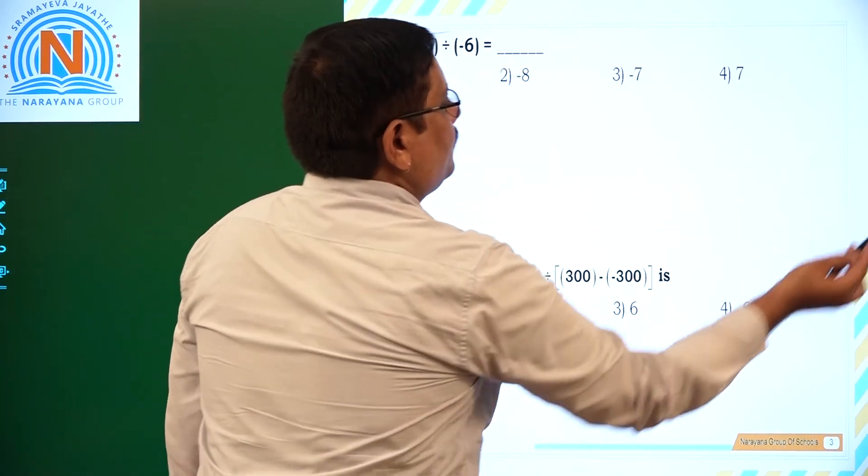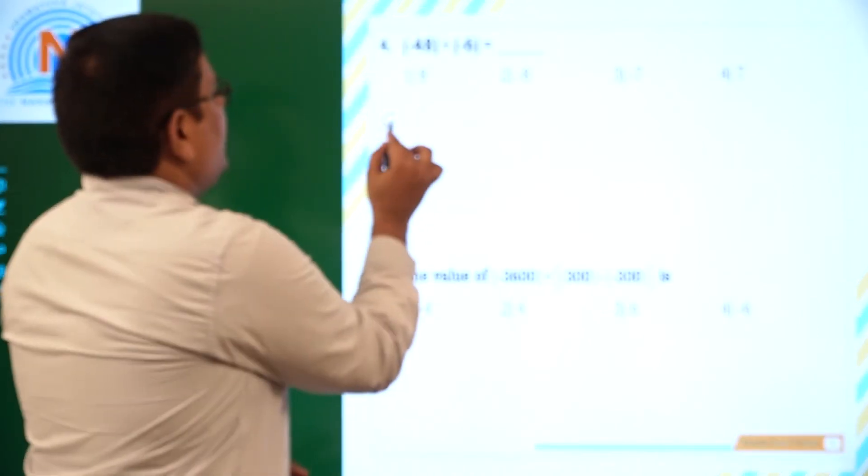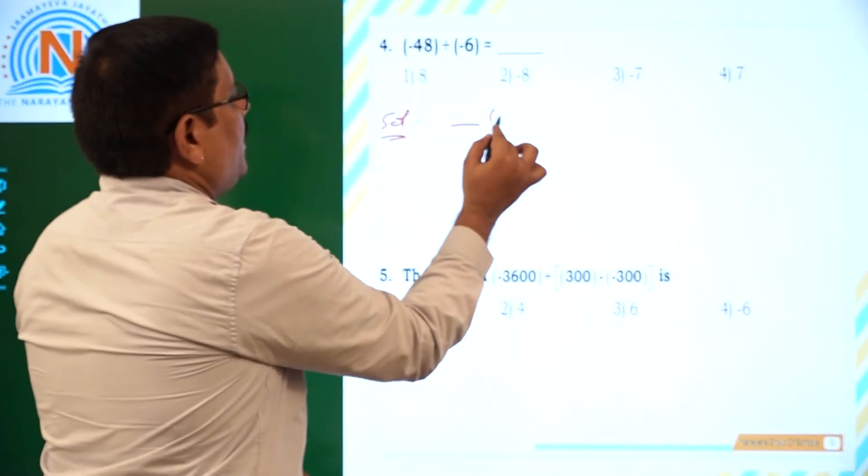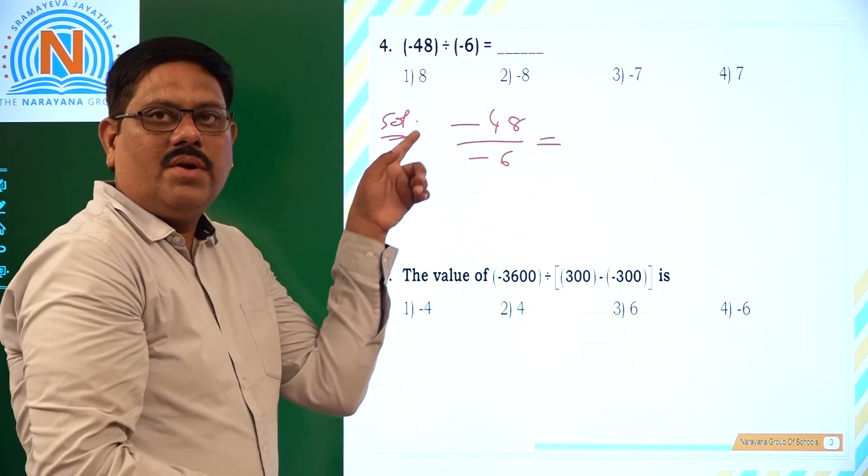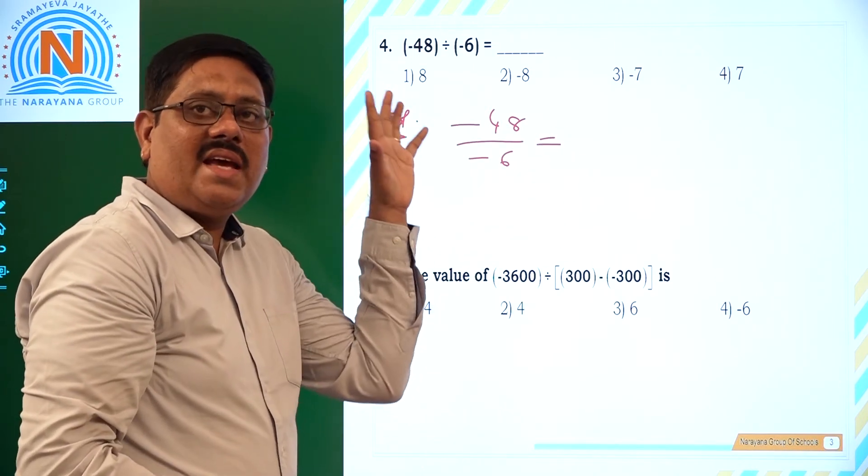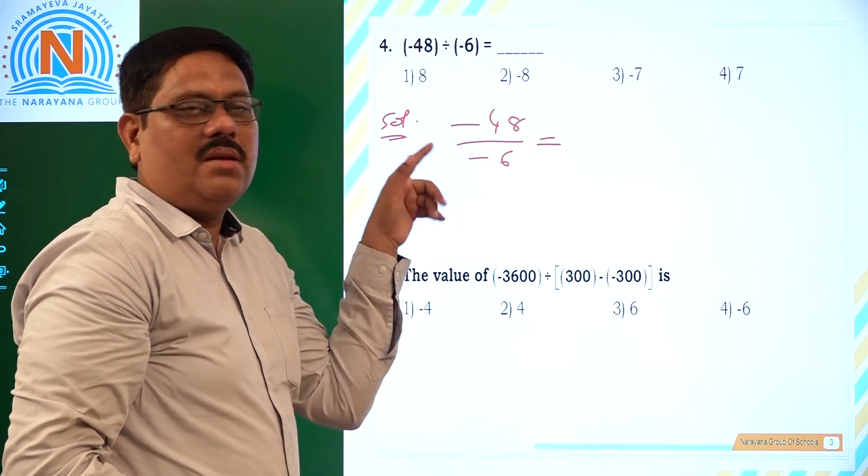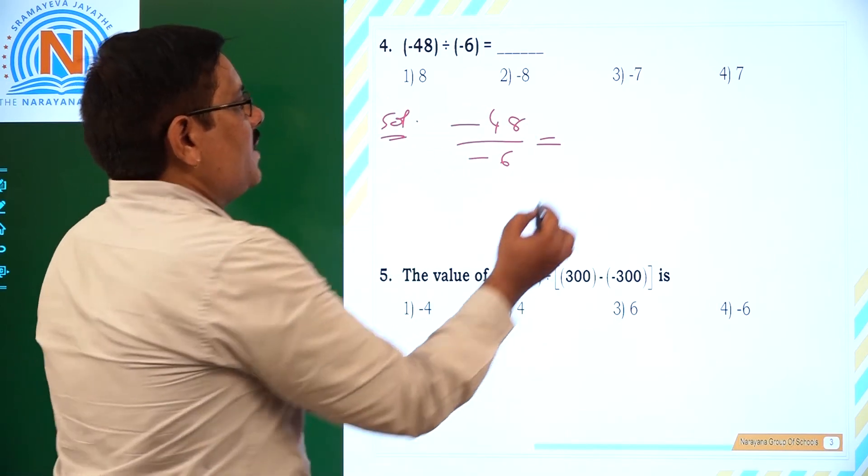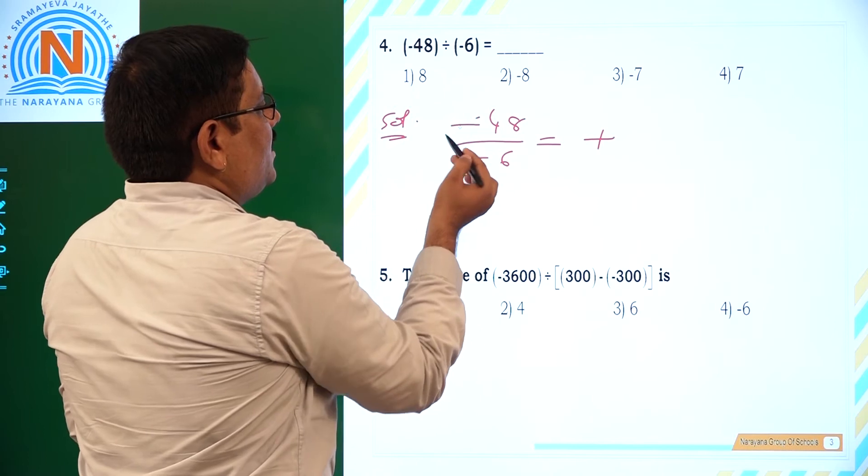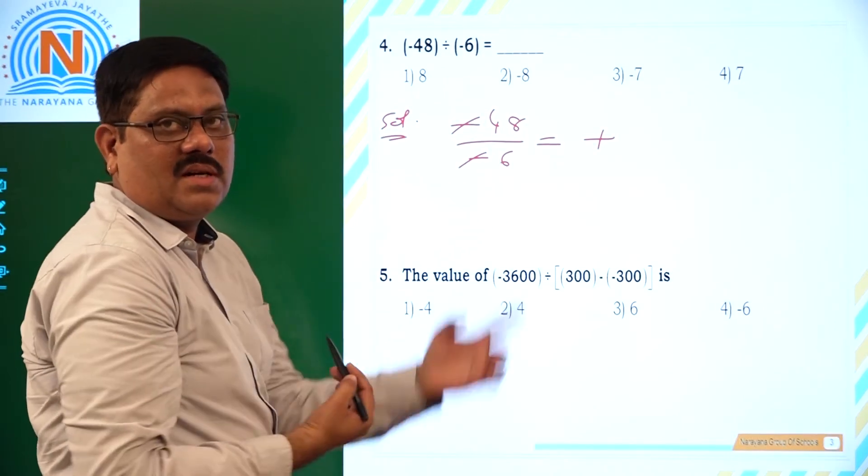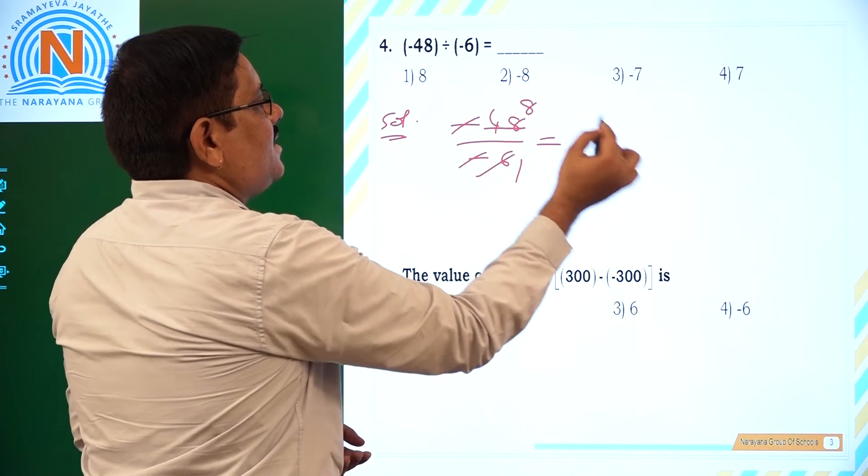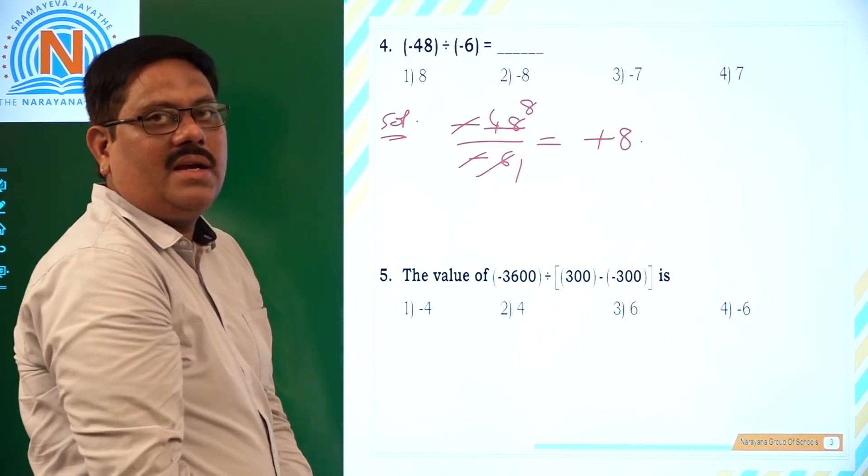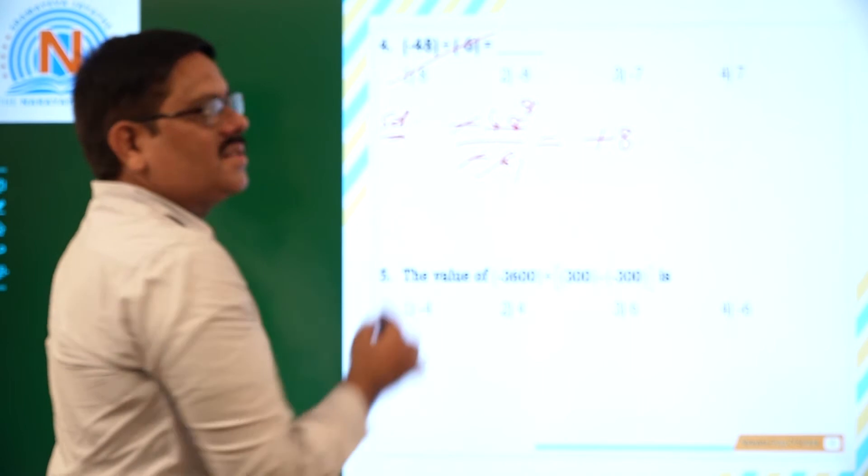Now we will move to the next question. Minus 48 divided by minus 6. Here also, if you observe, numerator and denominator have same sign. So the resultant sign becomes plus. 48 by 6 equals 8. So the answer is plus 8, which is the first option.